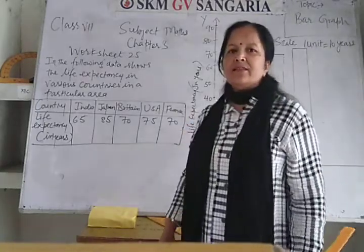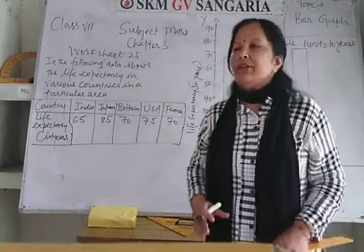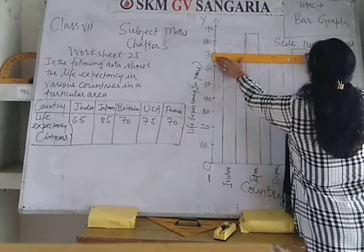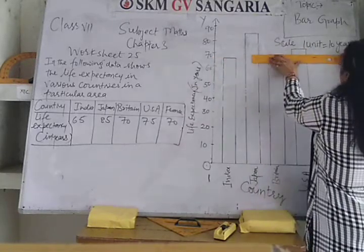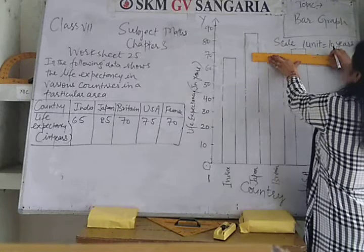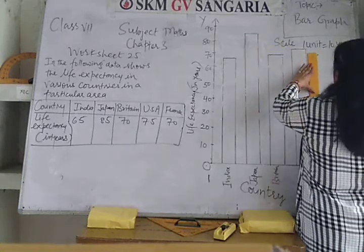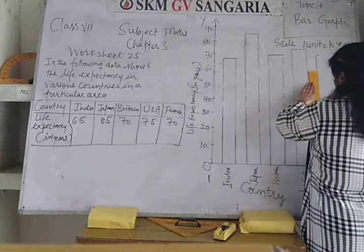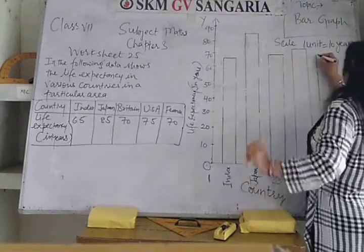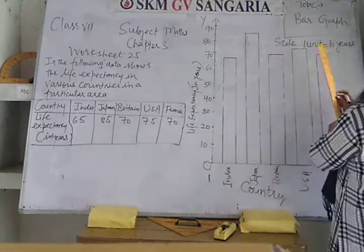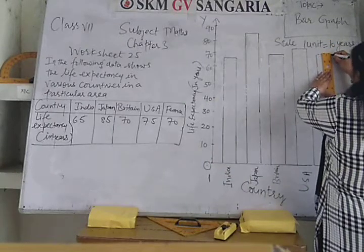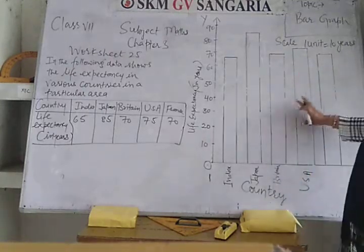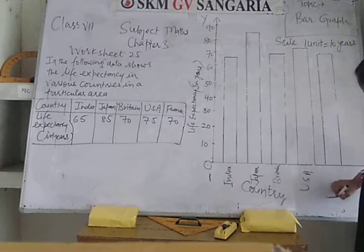The next country is France. Their life expectancy is 70 years. Draw the bar up to 70. This bar is representing France. Write France below the bar.